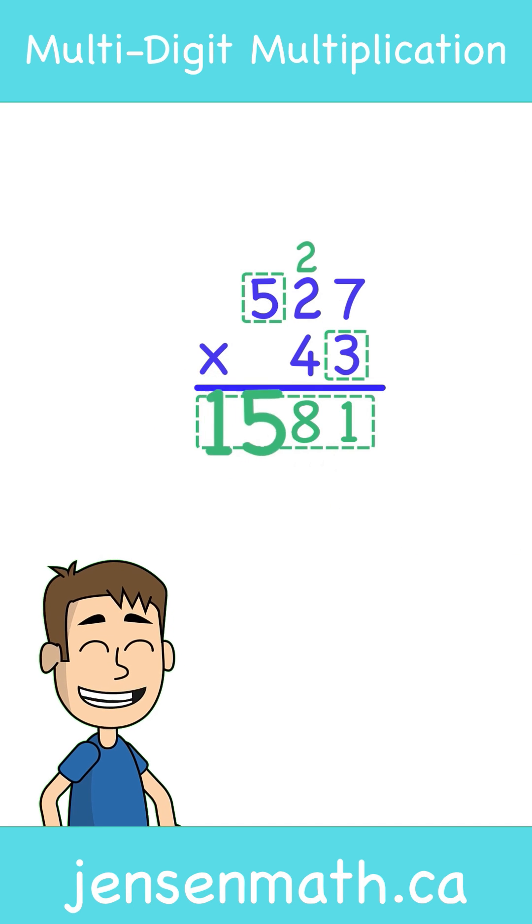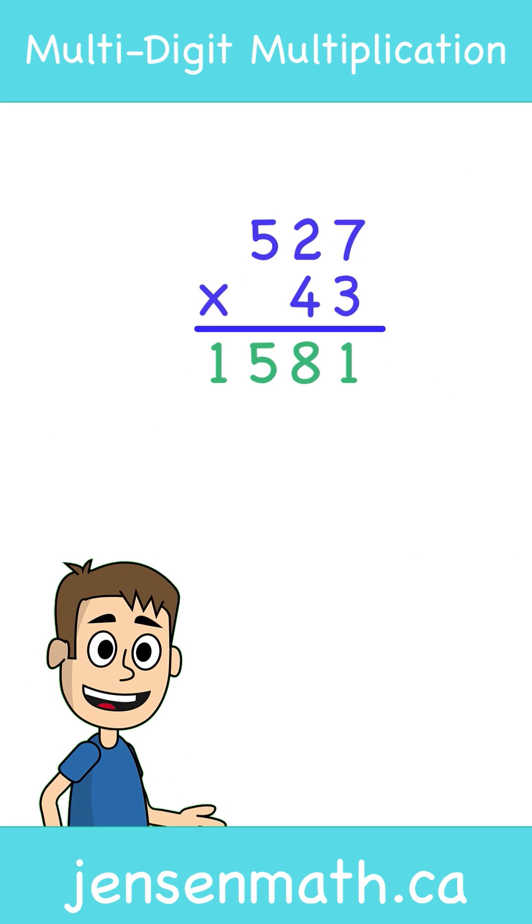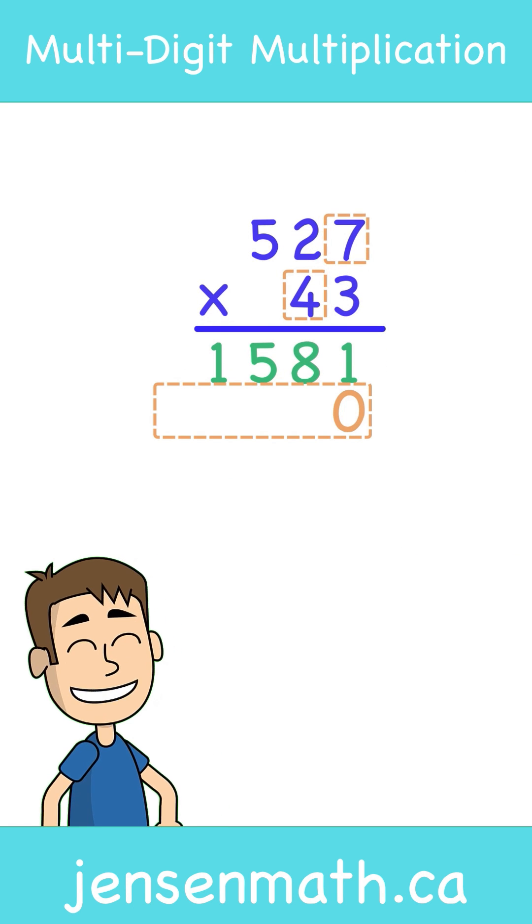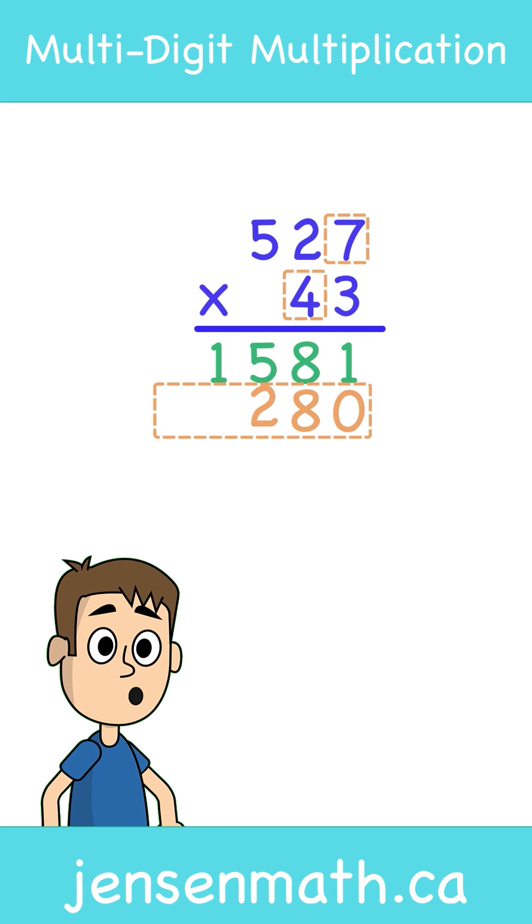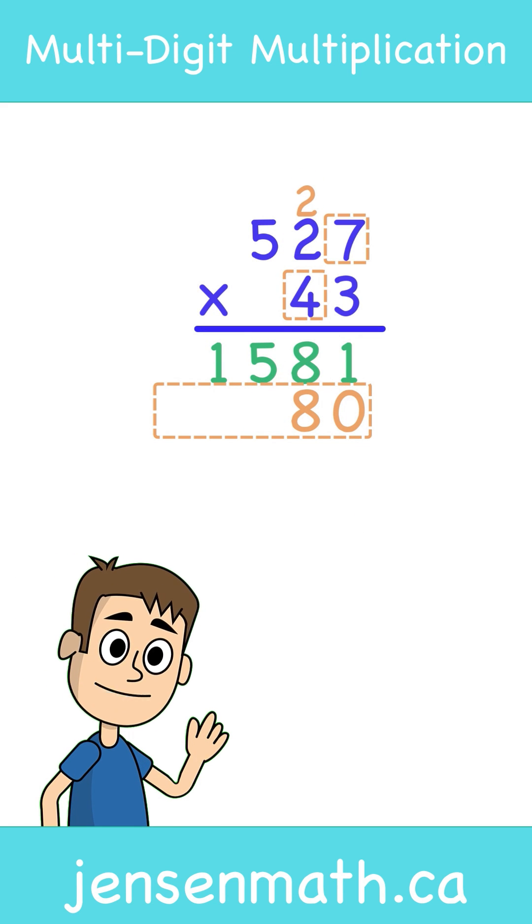3 times 5 is 15. Now we move to the second digit in our bottom number. 4 times 7 is 28. We will leave the 8 in the product, but carry the 2 up above the next digit in the top number.